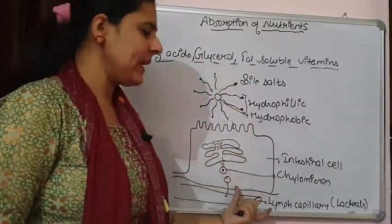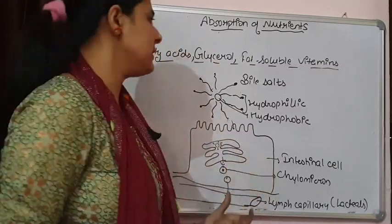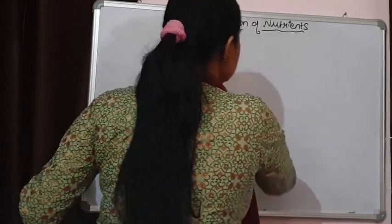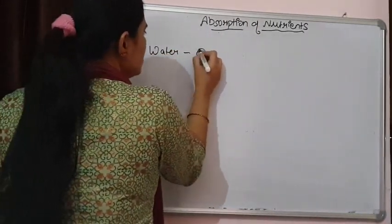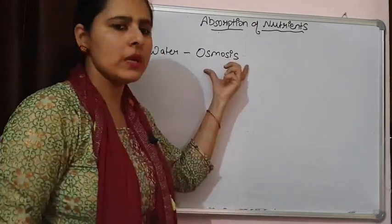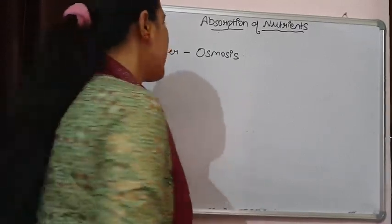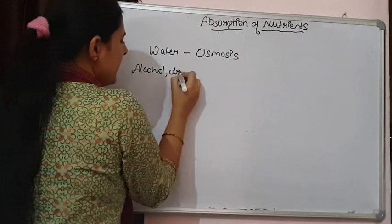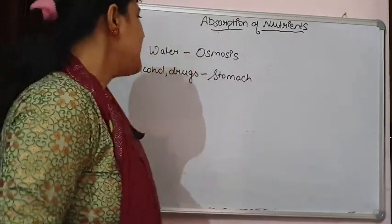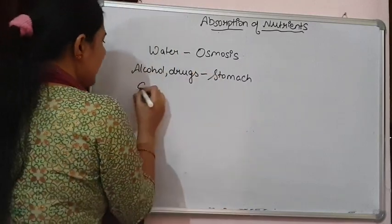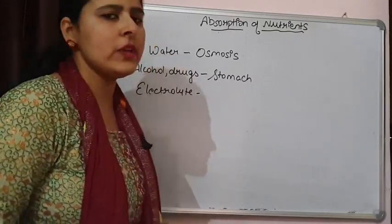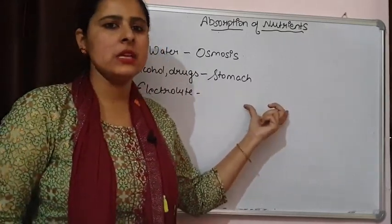This process mostly takes place in the region of the small intestine. Now, water is absorbed simply by the process of osmosis — in the alimentary canal the concentration of water is more, so it moves from higher concentration to lower concentration into the intestinal cells and finally into the blood capillaries. Alcohol and drugs are mostly absorbed in the stomach region, with some absorption in the small intestine. Other substances like vitamins and electrolytes — chloride ions, sodium ions, magnesium, and other ions — are also absorbed, mostly by active transport in the intestine region.